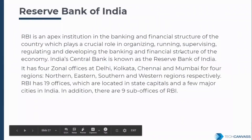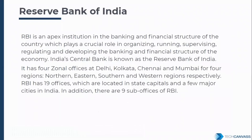RBI is the apex institution in India's banking and financial structure. It majorly helps in organizing, supervising, and regulating all banks under it, thereby stabilizing the country's economy. RBI manages all banks under its act, and has opened branches in four zones — north (Delhi), east (Kolkata), south (Chennai), and west (Mumbai) — with 19 offices total, located in state capitals.